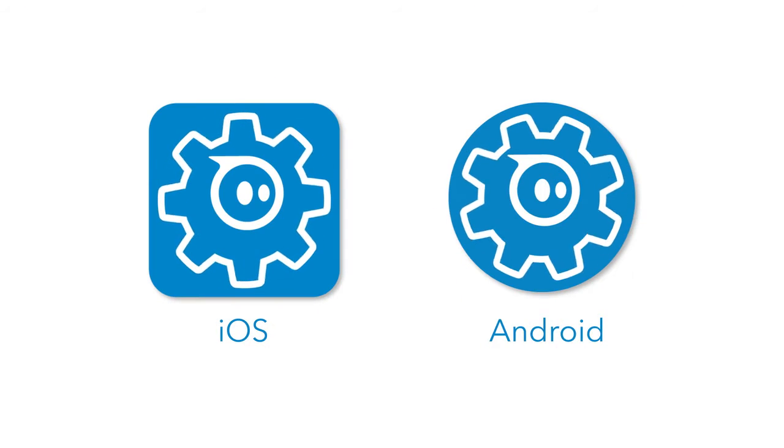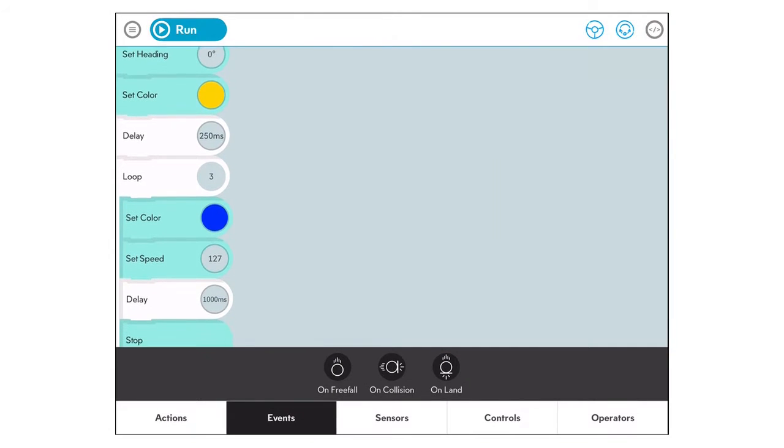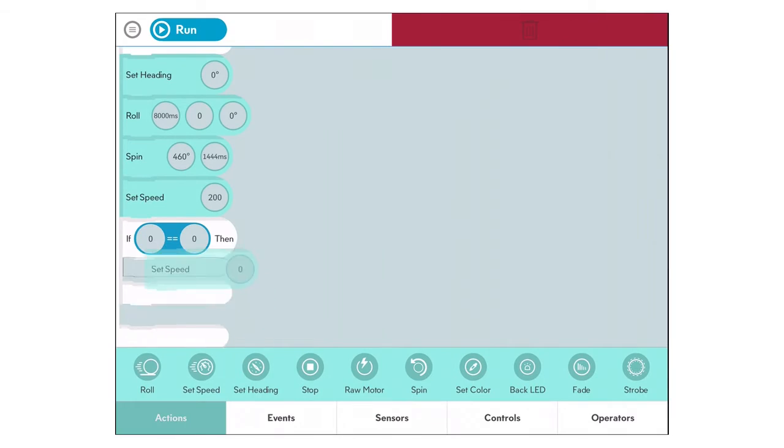Get started by downloading the Spark app and connecting to your ball via Bluetooth. If you're new to coding, learn some basic principles by first exploring the sample programs.